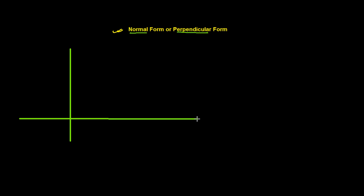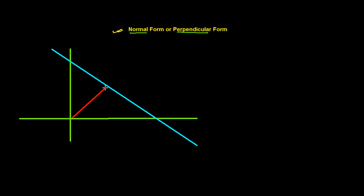Suppose we have a y-axis and an x-axis, and we have a line — let's call it line L1. I'm going to draw a perpendicular to this line from the origin. Let me label everything: this is my x-axis, this is my y-axis, this is my origin, and this is line L1. From the origin, I am drawing the perpendicular to line L1, and let's say the perpendicular meets the line at point L.